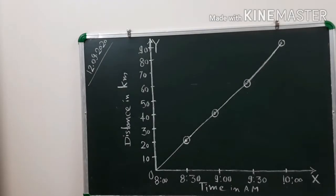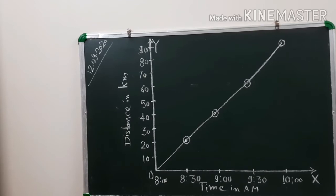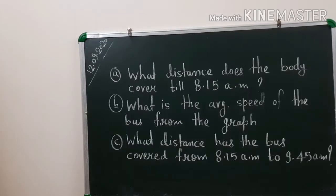Good morning children. In the last video we discussed some questions based on distance-time graphs where data was given and we had to draw the graph. Hope you understood all the questions. Today we will solve those types of questions where a graph is drawn and we have to answer some questions based on the graph. Our first question is: observe the following graph and answer the questions.